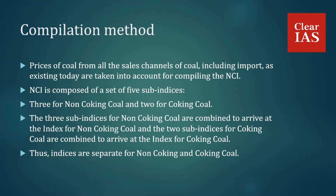NCI is composed of a set of five sub-indices — three for non-coking coal and two for coking coal. The three sub-indices for non-coking coal are combined to arrive at the index for non-coking coal, and the two sub-indices for coking coal are combined to arrive at the index for coking coal. Thus, indices are separate for non-coking and coking coal, and as per the grade of coal pertaining to a mine, the appropriate sub-index is used to arrive at the revenue share.